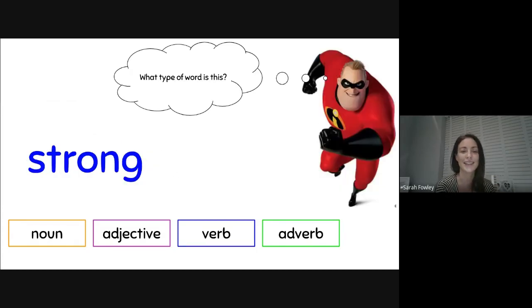What type of word is this? Strong. Is it a noun, adjective, verb, or adverb? Brilliant. It's an adjective. It is a describing word. It's describing me, of course.